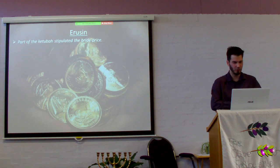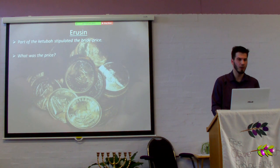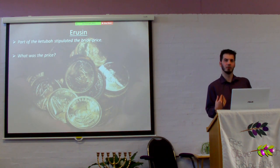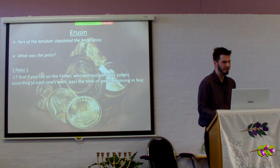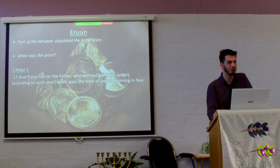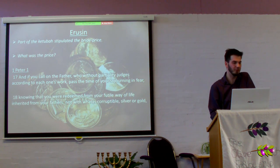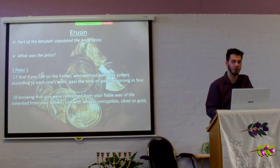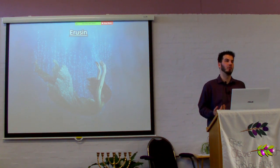Part of the Ketubah stipulated the bride price, the dowry. What was the price for us? First Peter 1: 'Knowing that you were redeemed from your futile way of life inherited from your fathers — not with what is corruptible, silver or gold — but with the precious blood of Messiah, as of a lamb unblemished and spotless.' This is how we were paid for, this is how we were bought.